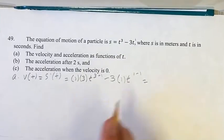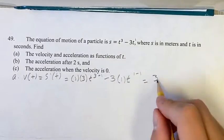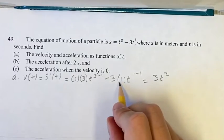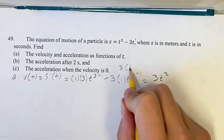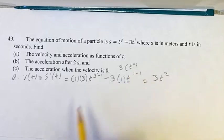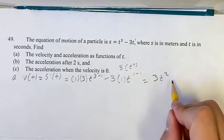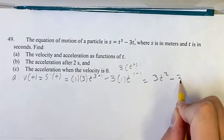This is something we can simplify. We have 3t to the 3 minus 1 is t squared, minus 3 times t to the 0. t to the 0 is just 1, so this is just 3 times 1, so minus 3.